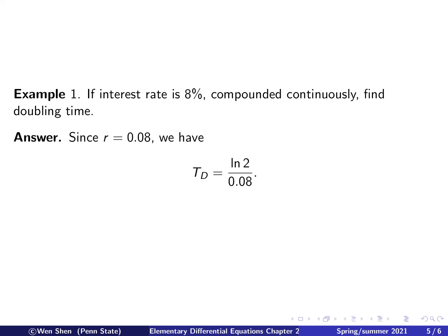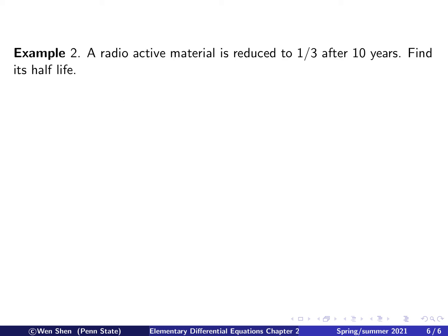Okay. We can use the formula we derived on the previous slide immediately. So here we are given the rate r is 0.08, which is positive, and then we know that the doubling time is simply ln of 2 over r, which is 0.08. Of course, you can punch this number in the calculator or whatever computing software and find out exactly what is TD, but I'll leave that to you.